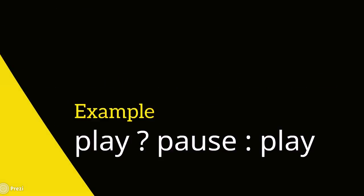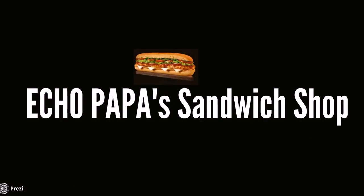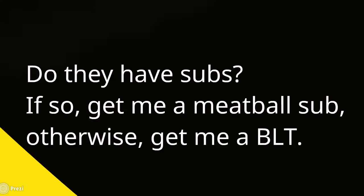Here's an example: 'play?' — normally 'play' would just play the track, but with a question mark, it becomes a question: is the track playing? If yes, pause it; otherwise, play it. So this acts like a play/pause toggle. Conditional branching can be confusing at first, and it's not specific to Virtual DJ — it applies to any kind of scripting or programming.